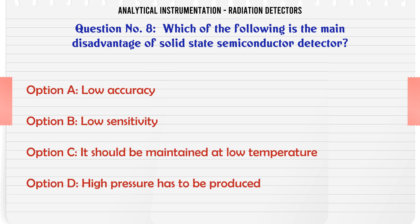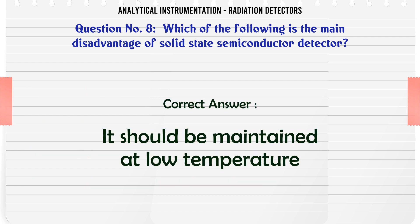Which of the following is the main disadvantage of solid-state semiconductor detector? A. Low accuracy. B. Low sensitivity. C. It should be maintained at low temperature. D. High pressure has to be produced. The correct answer is: it should be maintained at low temperature.